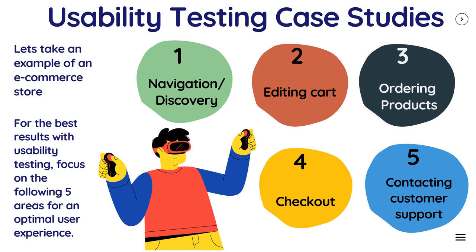If you run an e-commerce store, you need to focus on essential tasks like product discovery and checkout. Focus on these five areas to reduce abandoned carts and create more loyal customers: first, navigation and discovery — can users quickly find products without issue? Second, editing the cart — can customers see all products, edit volumes, and remove items easily? Third, ordering products — does the website make it easy for first-time and returning customers to order? Fourth, checkout — can users quickly complete checkout without unexpected roadblocks? Fifth, contacting support — ensure live chat, call, or email support is readily available. Testing scenarios should include landing on a product page from organic search, finding a product from the home page, ordering, editing cart items, contacting customer support, and tracking orders.